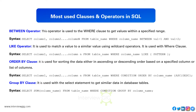The ORDER BY clause is used for sorting the data either in ascending or descending order based on a specified column or list of columns. Syntax: SELECT column1, column2, column_n FROM table_name WHERE condition ORDER BY column_name ASC/DESC.